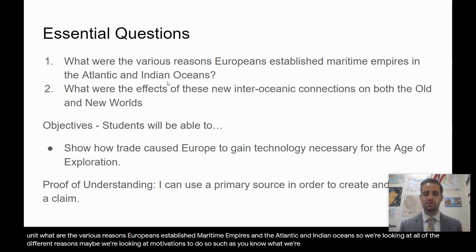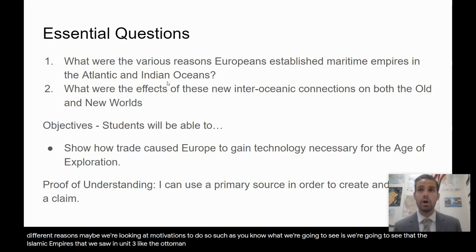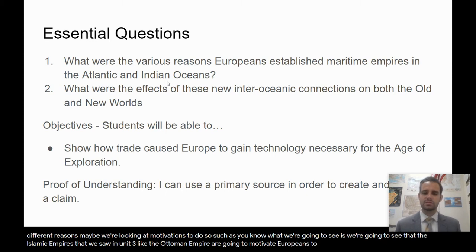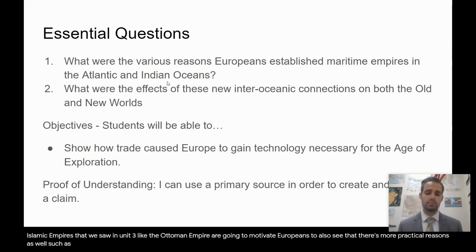What we're going to see is that the Islamic empires from unit three, like the Ottoman Empire, are going to motivate Europeans to establish these maritime empires. But we also see that there are more practical reasons as well, such as obtaining wealth and spreading religion.